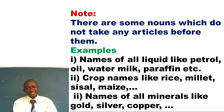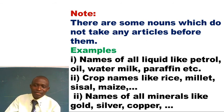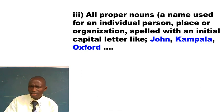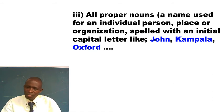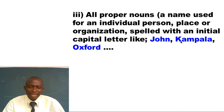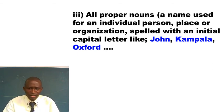We also have names of all minerals like gold, silver, copper — they don't take articles. And all proper nouns — a name used for an individual person, place, or organization, spelled with an initial capital letter. For example: John — you must write a capital J; Kampala — a capital K. It is grammatically wrong to write Kampala in small letters because it is a proper noun. So all nouns of this kind don't take article THE or any article. You can't say 'The John,' 'The Kampala,' or 'The Mukono' — it is grammatically wrong.